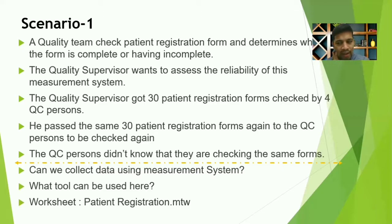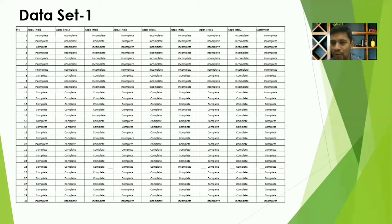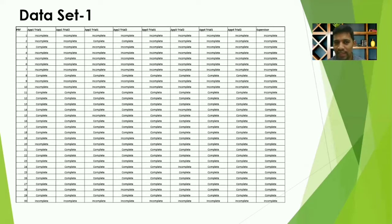I have the worksheet which I'm going to explain. This is the data set — it has N equal to 30. It has appraiser one, trial one and trial two; appraiser two, trial one and trial two; appraiser three, trial one and trial two; appraiser four, trial one and trial two; along with the supervisor's verdict.